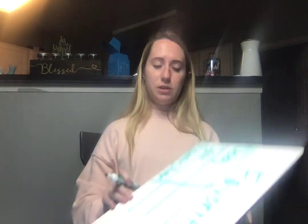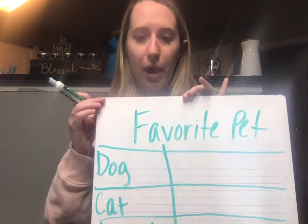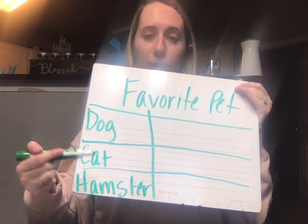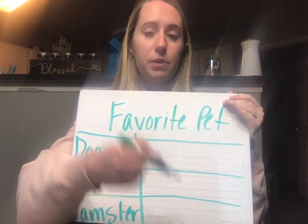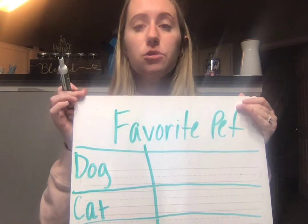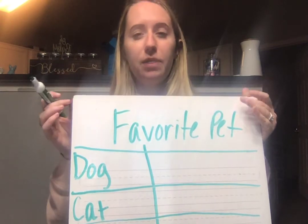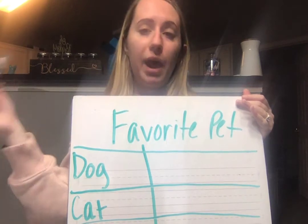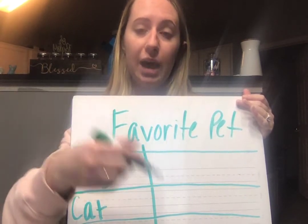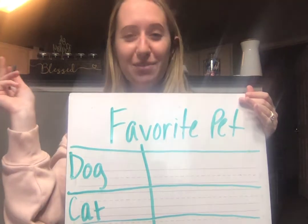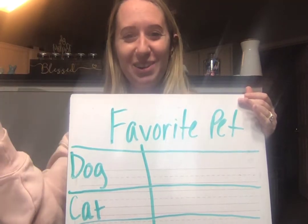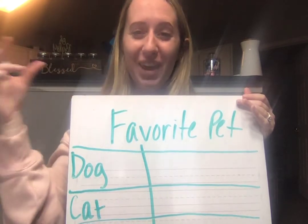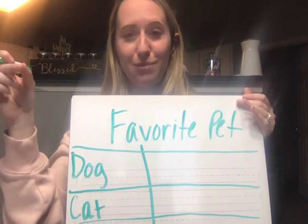So this is what my tally chart looks like so far. I have my title up here, 'Favorite Pet,' and then I put my categories off to the side — I have dog, cat, and hamster — and then I have these blank spaces where I can put the tallies. When we do this in class, I would have you come up to the board and put a tally on which one is your favorite. Obviously I'm by myself here and you're at your house, so we can't do that. Today I'm going to make up a fake class and I'll tell you how many people voted for each one.